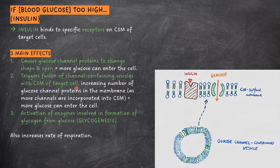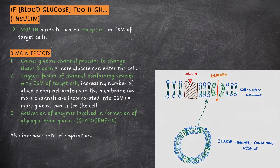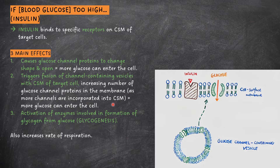If blood glucose concentrations are too high, this is controlled by the hormone insulin. If high concentrations of blood glucose are detected by beta cells, they secrete insulin which binds to specific receptors on the cell surface membrane of target cells. This triggers three events. First, it causes glucose channel proteins to change shape and open, allowing more glucose to enter the cell. It also triggers the fusion of channel-containing vesicles with the cell surface membrane of target cells, increasing the number of glucose channel proteins in the membrane as the channels are incorporated into the cell surface membrane, allowing more glucose to enter the cell.